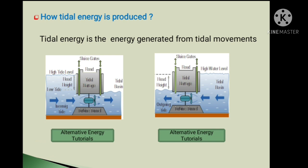How is tidal energy produced? Tidal energy is the energy generated from tidal movements. See in the left side figure, the incoming tide is shown. This incoming tide rotates the turbine and it generates electricity. Sluice gates are shown in the tidal barrage — sluice gates are the gates that allow water to flow through the turbines to generate electricity. They also allow the tidal basin to fill on the incoming tide and empty through the turbine system.